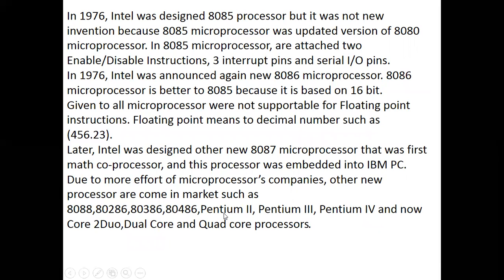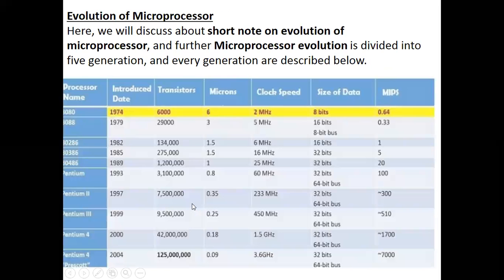In 1990, the Pentium 1, Pentium 2, and Pentium 3 were introduced by Intel. Now we have dual-core and many other processors that we see in daily life. This is the history of your microprocessor.